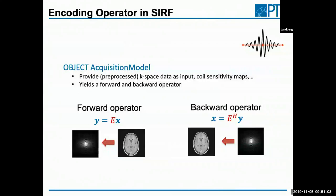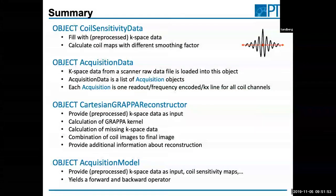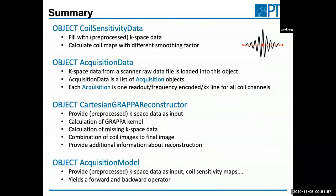In SURF, these things are — to a certain extent — already implemented. There is an AcquisitionModel object, which is what we refer to as the encoding operator in MRI. It contains all the information about the acquisition and has two parts: a forward operator going from image to K-space, and a backward operator going from K-space to image. With these two tools you can formulate any iterative reconstruction problem and add any regularization, without needing to know all the internal details of the coil maps. That's a summary of what I covered today, and now Johannes will take over for the practical exercises where you'll use these objects and play around with them.